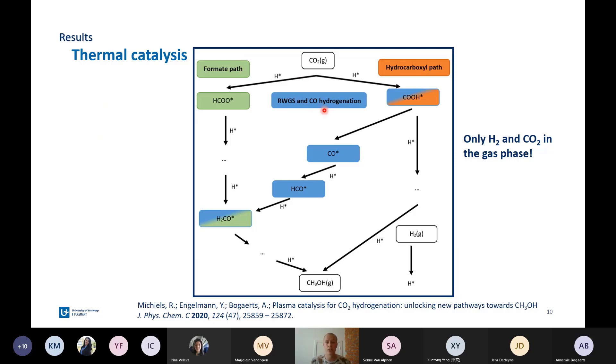We see here that there are three pathways that are mentioned in literature for conversion of CO2 to methanol. We have the green pathway, which is the formate pathway through a formate intermediate. There is the blue pathway through CO, and the orange pathway, the hydrocarboxyl pathway. These pathways are all in the model, but we see that only the green pathway and the blue pathway are important for methanol formation. The orange pathway does not contribute significantly to the methanol production.